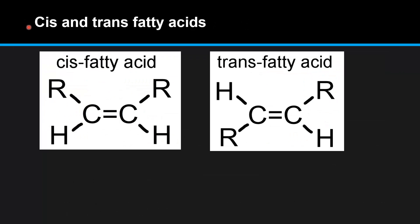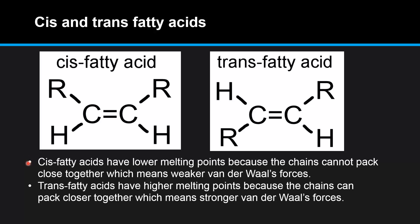Next we look at the melting points of cis and trans fatty acids. On the left we have a cis fatty acid, which has both hydrogen atoms on the same side of the carbon to carbon double bond. On the right we have a trans fatty acid, where the two hydrogen atoms are on opposite sides of the carbon to carbon double bond. Cis fatty acids have lower melting points because the chains cannot pack close together, which means weaker van der Waals forces. Trans fatty acids have higher melting points because the chains can pack closer together, which means stronger van der Waals forces.